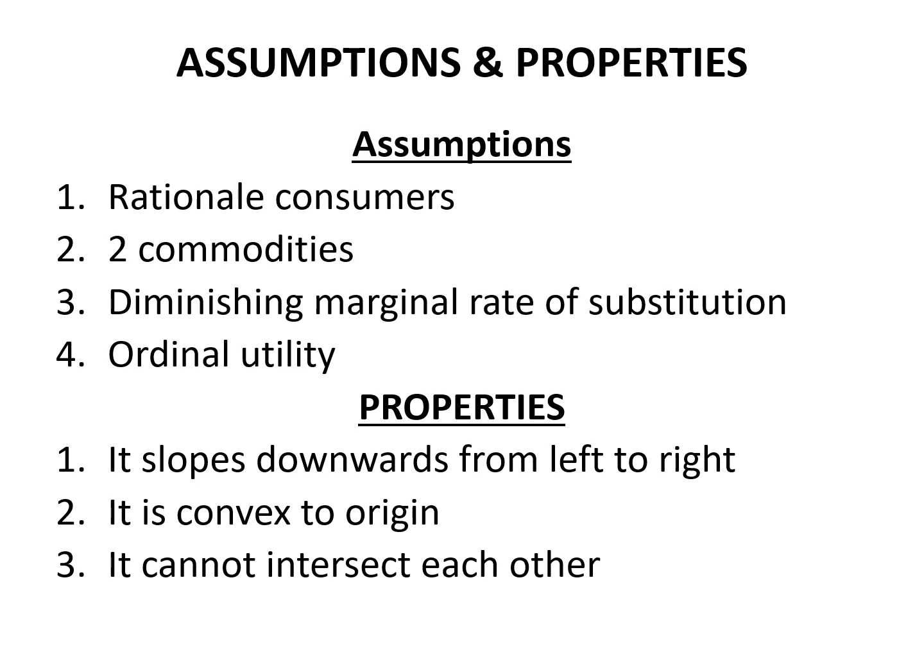The second assumption is two commodities — the customer has a fixed income where he allocates for buying only two commodities. The third is diminishing marginal rate of substitution. The indifference curve depends on this principle, which states that to obtain more units of a specific commodity, the consumer has to let go of some units of other products. The last assumption is ordinal utility — the combination of two commodities are ranked based on consumer preferences.